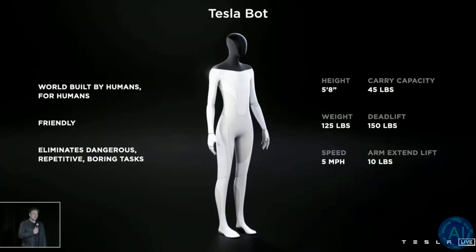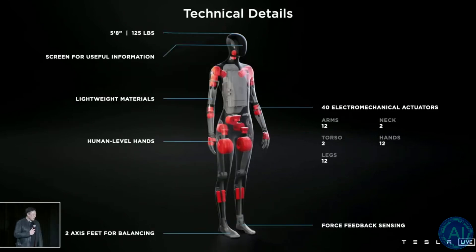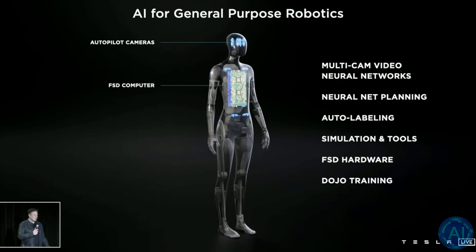We think we'll probably have a prototype sometime next year that basically looks like this and navigate through a world built for humans and eliminate dangerous, repetitive and boring tasks. So, yes, it's around 5'8", has a screen where the head is for useful information, but it's otherwise basically got the autopilot system in it. So it's got cameras, got eight cameras and full set driving computer and making use of all of the same tools that we use in the car.